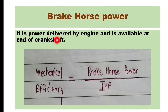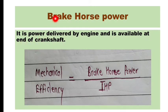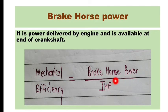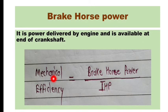Brake horsepower (BHP) is the power delivered by the engine and available at the end of the crankshaft. It has a relation with mechanical efficiency and IHP: mechanical efficiency equals BHP divided by IHP. Therefore, BHP is computed by multiplying mechanical efficiency by IHP.